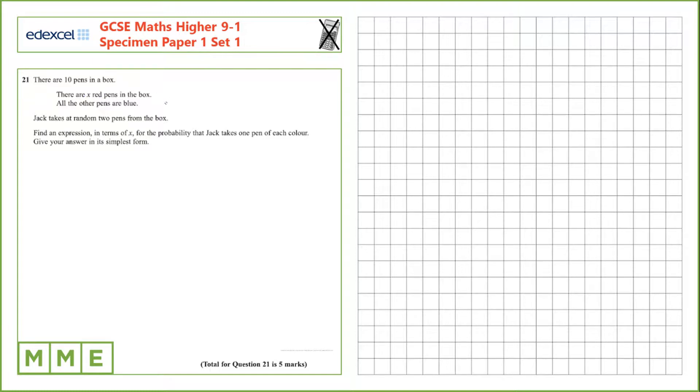First, if there's x red pens in the box and the rest are blue, then there's 10 minus x blue pens in the box. We're taking two pens from the box, so we're going to have to draw a probability tree for that information.